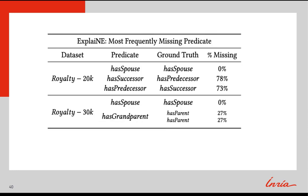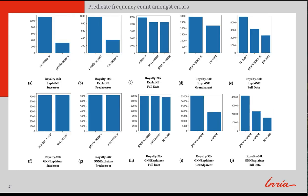This table shows Explaine's most frequently missing predicate, where each row represents a predicate subset, the ground truth predicate, and the percentage of triples not containing the ground truth predicates. For example, on the royalty20k dataset on the has-spouse subset, the percentage missing is 0, meaning each prediction contained the has-spouse relation, but incorrectly predicted one or both of the entities. Lastly, we report predicate frequency counts on incorrectly predicted explanations, where we can see GNN Explainer's errors were more uniform and Explaine's errors were more focused on the input predicate.